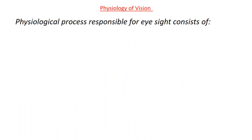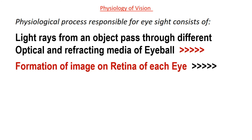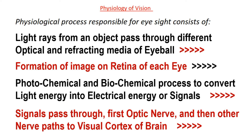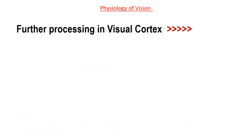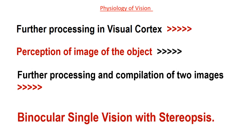To summarize, the physiological process responsible for eyesight consists of: light rays from an object passing through different optical and refracting media of the eyeball; formation of image on the retina of each eye; photochemical and biochemical processes to convert light energy into electrical energy or signals; signals passing through first the optic nerve and then other nerve paths to the visual cortex of the brain; further processing in the visual cortex; perception of the image of the object; and further processing and compilation of two images into binocular single vision with stereopsis. This is in short physiology of vision. Although the whole process is very complex, it takes only a fraction of a second — some milliseconds to be precise.